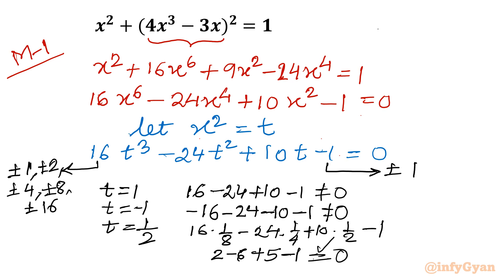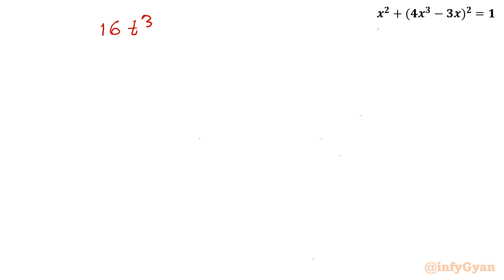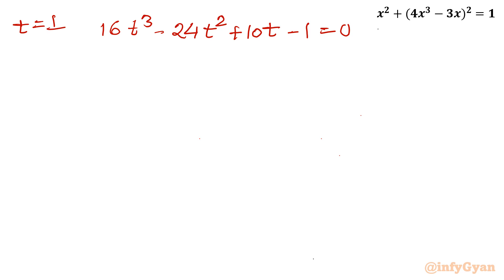That means t = 1/2 is a base solution as it makes our equation zero. So I will use synthetic division with t = 1/2 as the base solution for the cubic equation 16t³ - 24t² + 10t - 1 = 0.